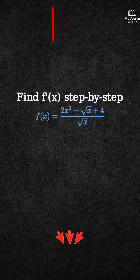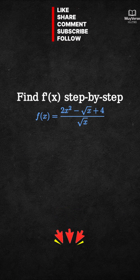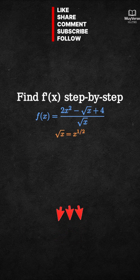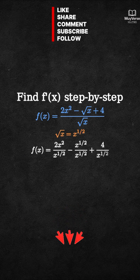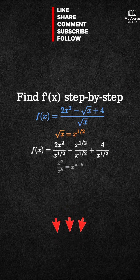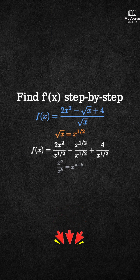Step 1: Simplify. First, rewrite square root of x as x to the 1 half. Now split the single fraction into three separate fractions. We'll simplify each term using the exponent rule x to the a over x to the b equals x to the a minus b. For the first term, 2x squared over x to the 1 half becomes 2x to the 3 halves.